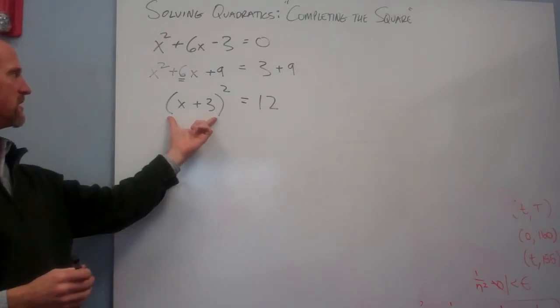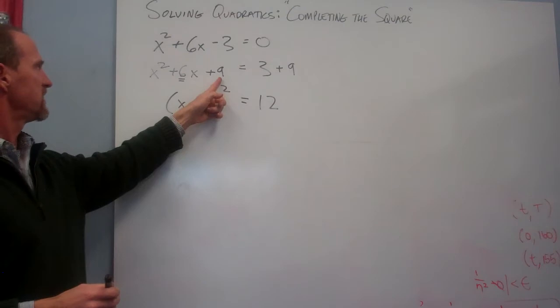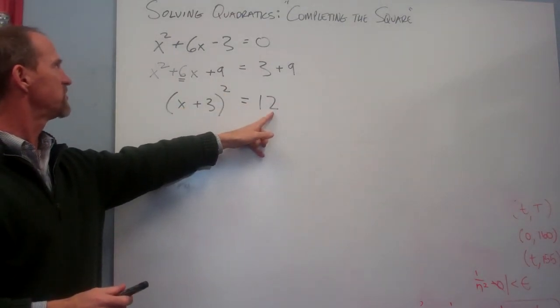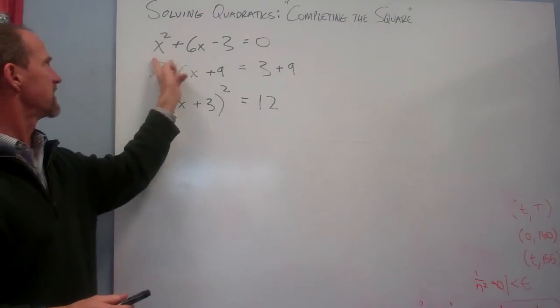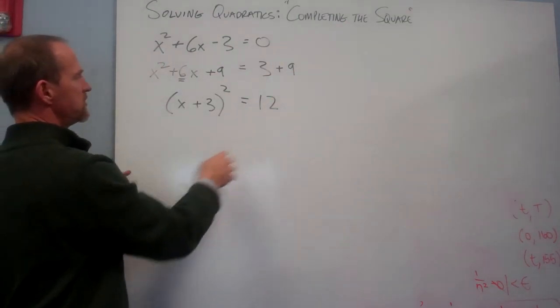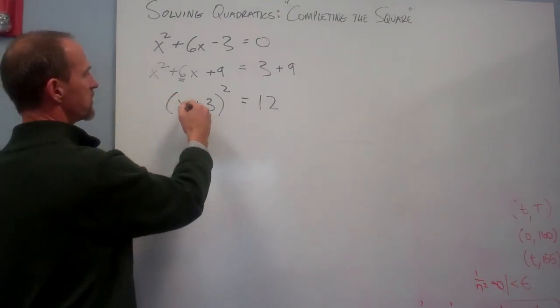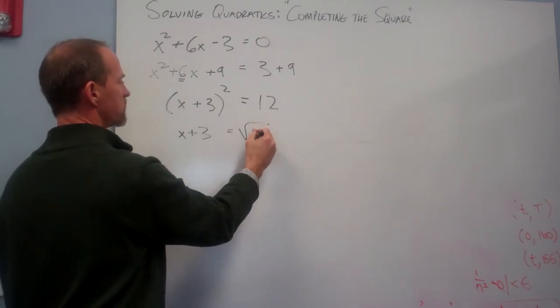If I were to foil this out, I would get x squared plus 6x plus 9 equals 12. And if I wanted to, I could subtract 12 from both sides and then I'd get exactly what I had up above. All right. So it's reversible. Well, now what do I do? Well, this is pretty easy to solve.